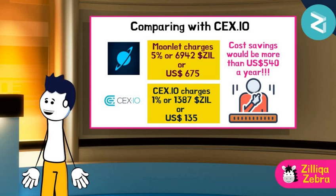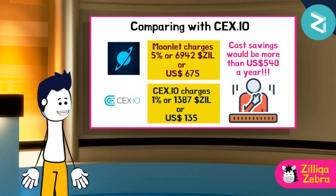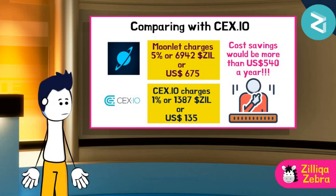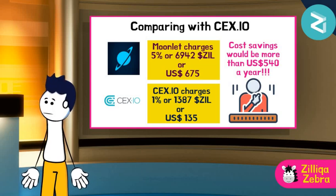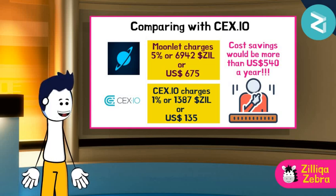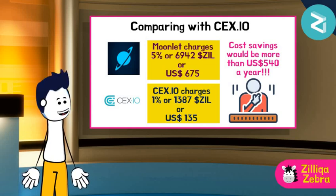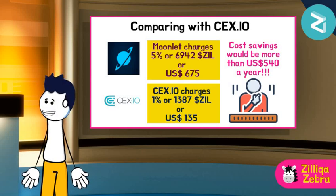Zilliqa Zebra then did a comparison and realized that CEX.IO is only charging a 1% commission. With the same 1 million ZIL stake, CEX.IO will only charge 1,387 ZIL, or about $135 US dollars. By choosing the latter SSN, Zilliqa Zebra will save about $540 US dollars a year.